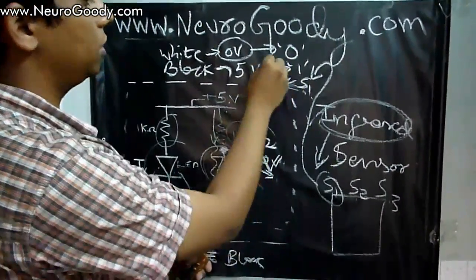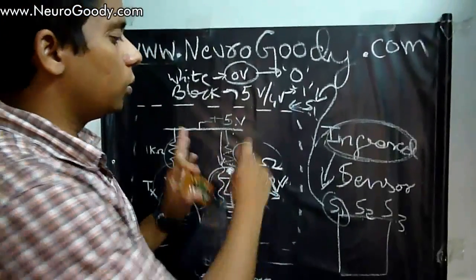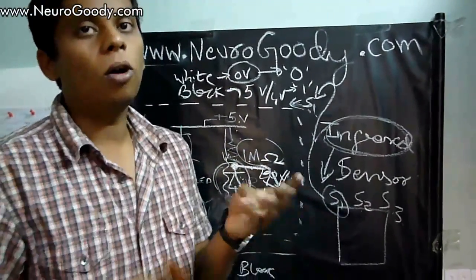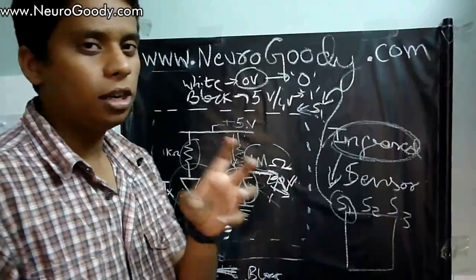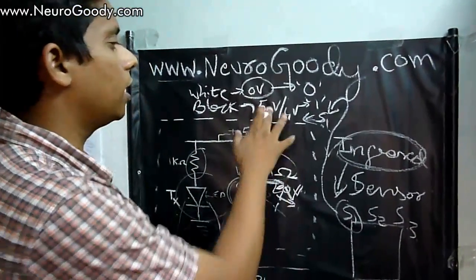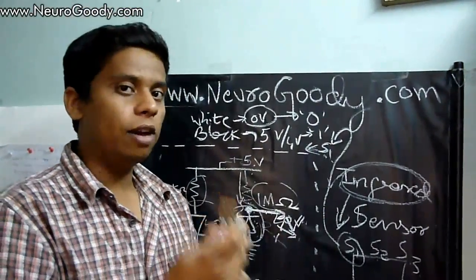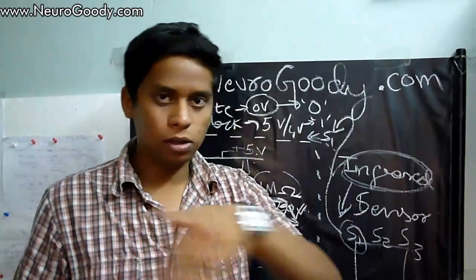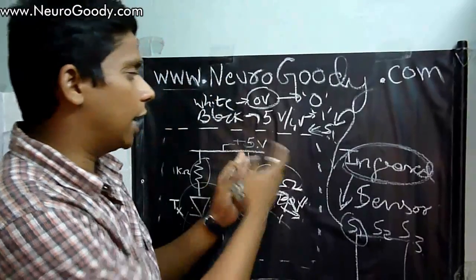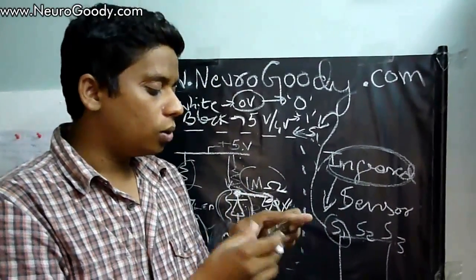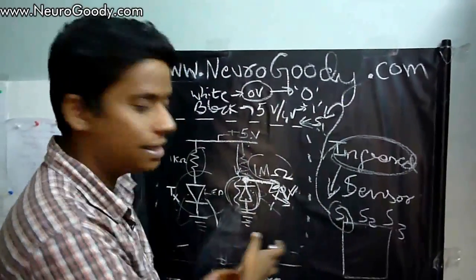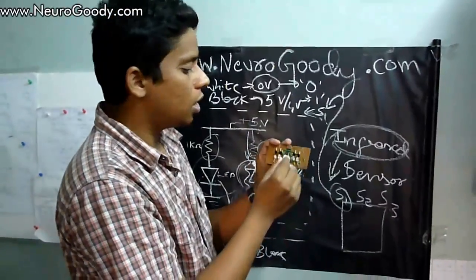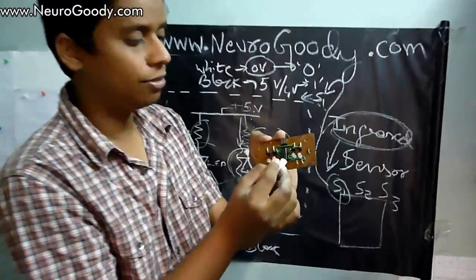As you can see, we have potentiometers and comparators. The voltage we get here is analog, five or zero volts. To process using logic gates or microcontrollers, we need digital logic data. We have to convert analog voltage values to digital values. I have written a post below this video on the NeuroGoody site explaining how to integrate the line sensor part to a comparator IC.